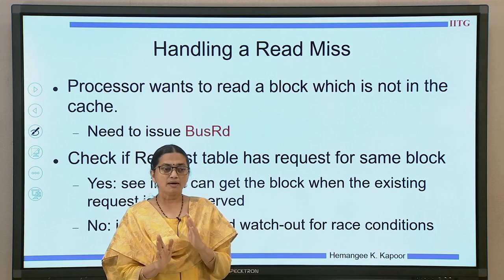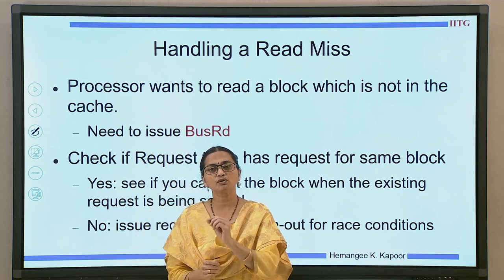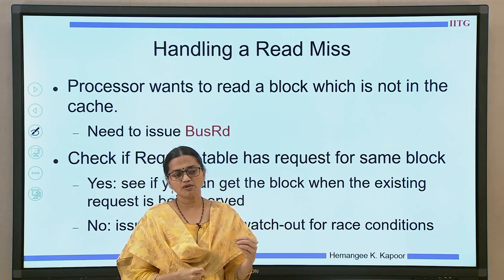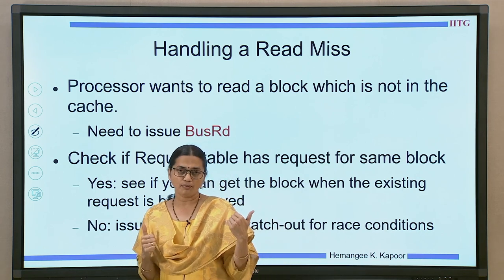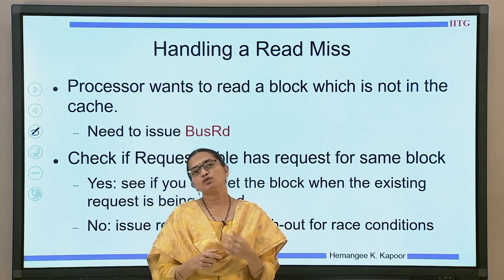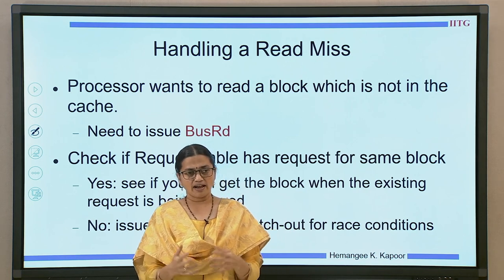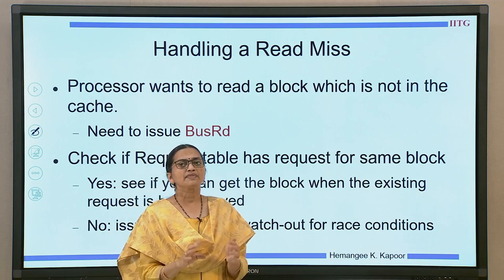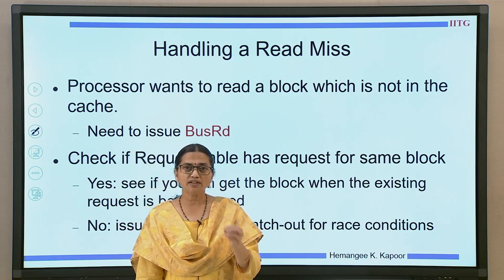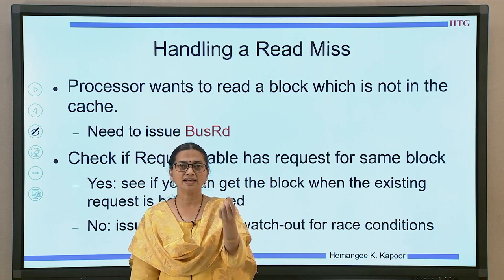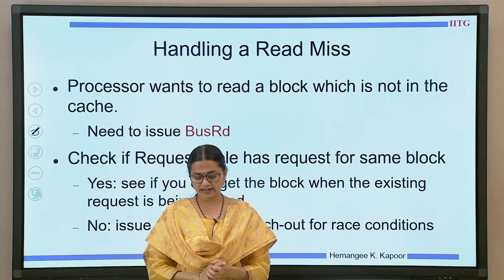When we send a read miss transaction onto the bus, an entry will be made in the request table. But first we must check whether we are permitted to put this transaction — we cannot allow conflicting transactions. If there is a pending write, we cannot issue the transaction. If another processor is also wanting to read and that request is still in the pending queue, sharing is allowed for read content, so both can get the data. If there is no pending request on this block, we can go onto the bus and put the request.